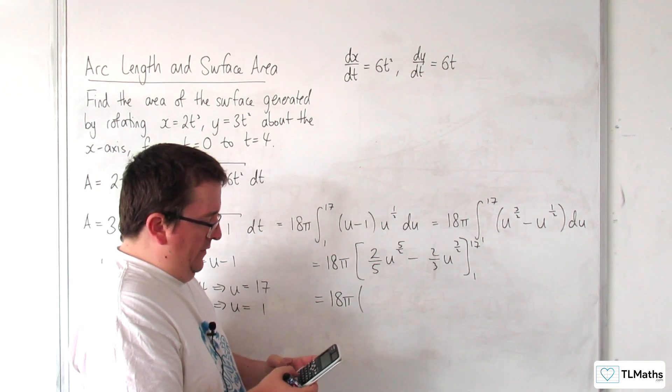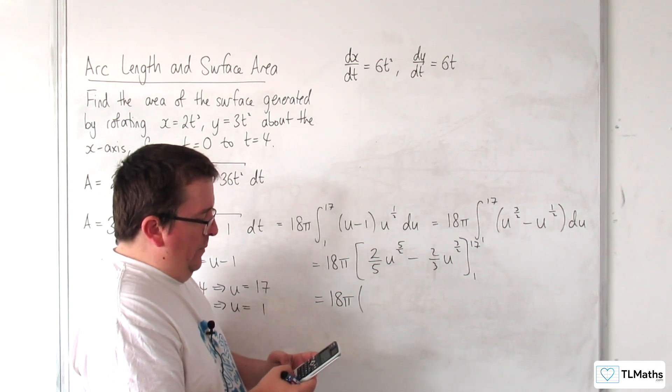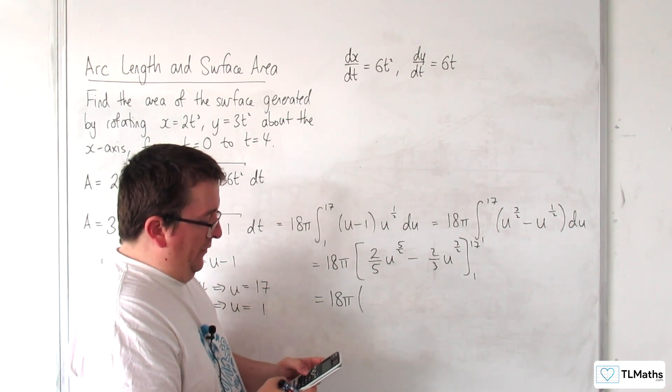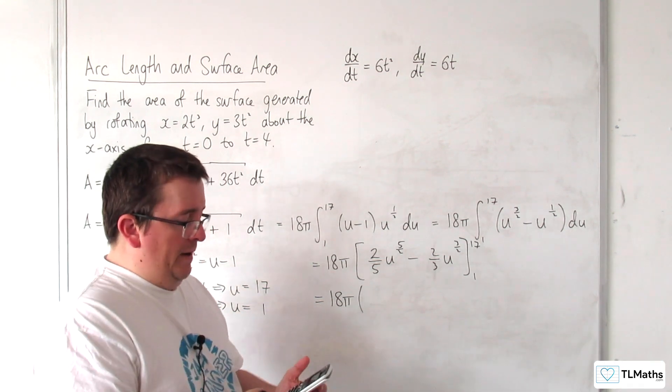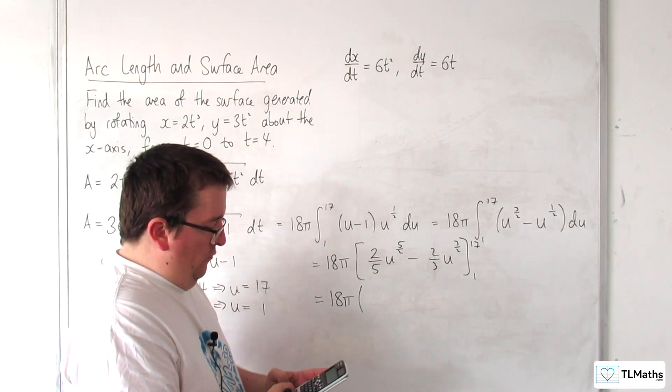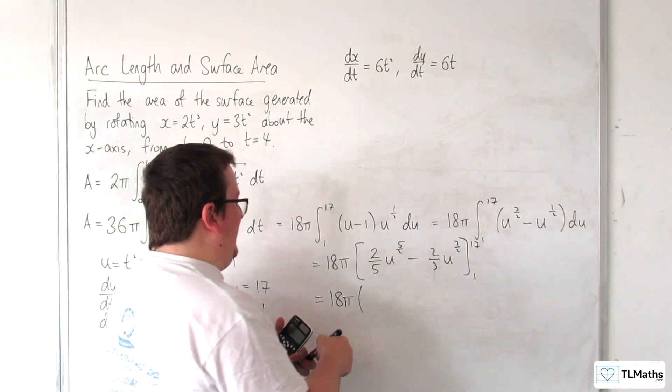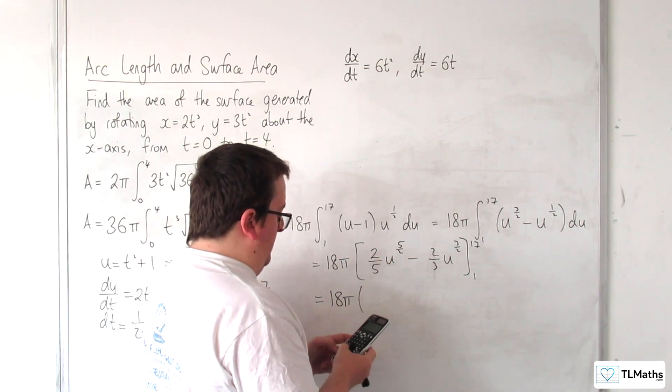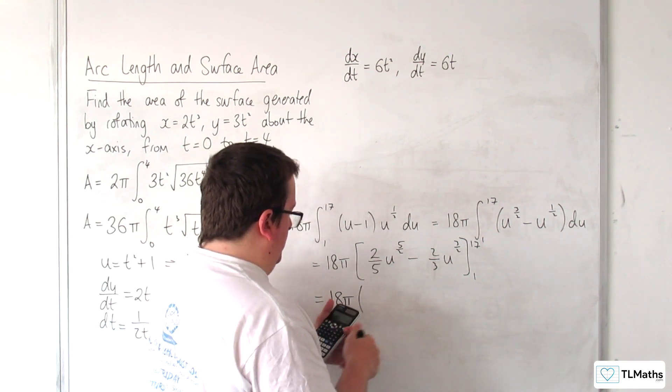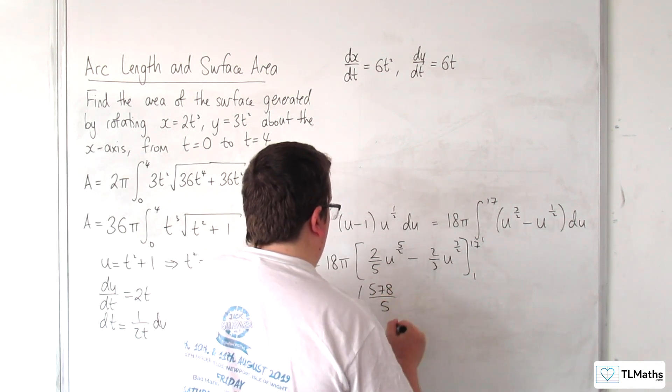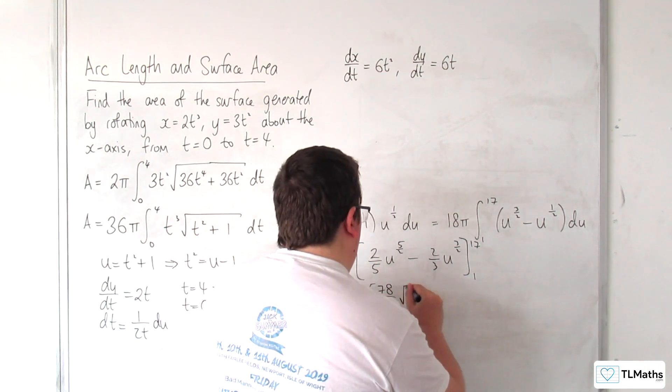Okay, so, root 17 times, well, we could do it to the power of 4, and then times that by root 17, and that would be to the power of 5, wouldn't it? Okay, so root 17 to the power of 4 is 289, and I need to multiply that by 2 fifths, which is 578 over 5, root 17.